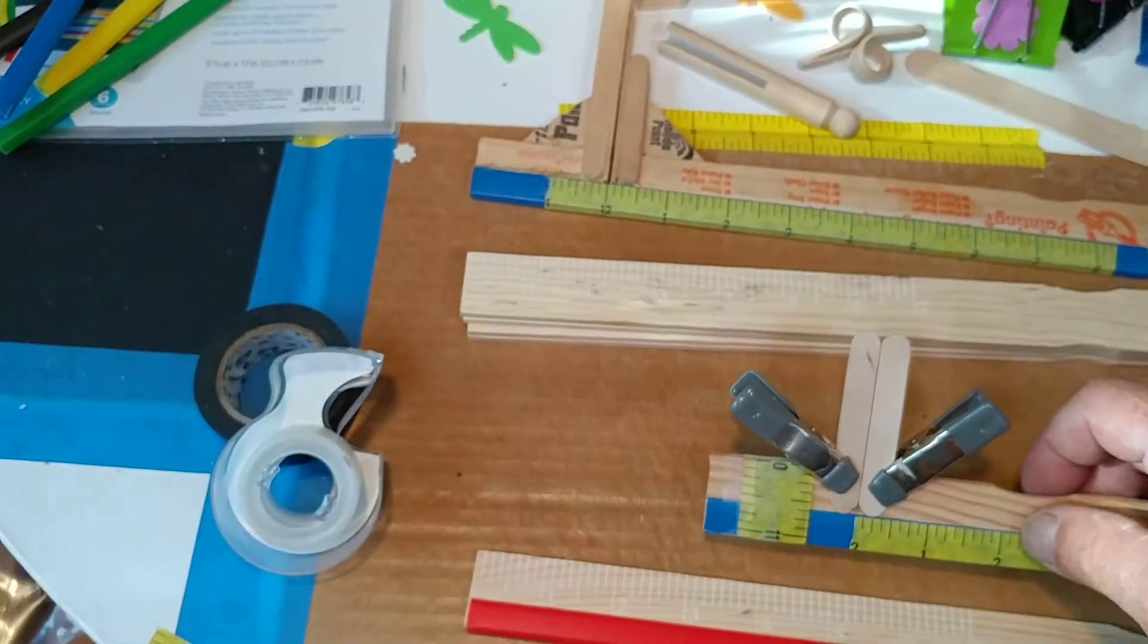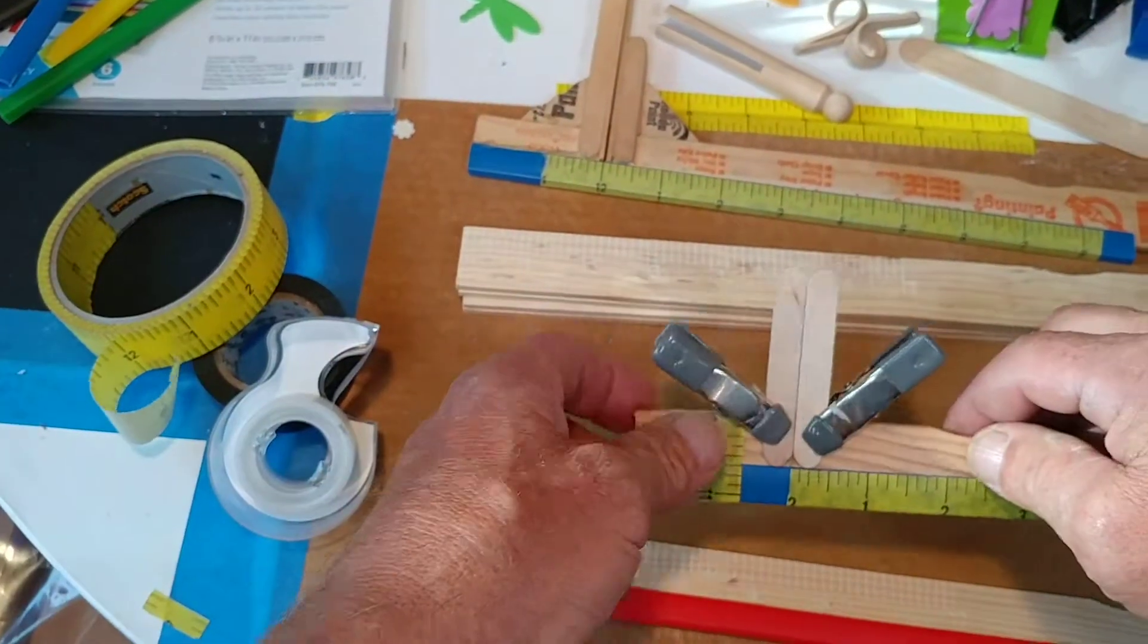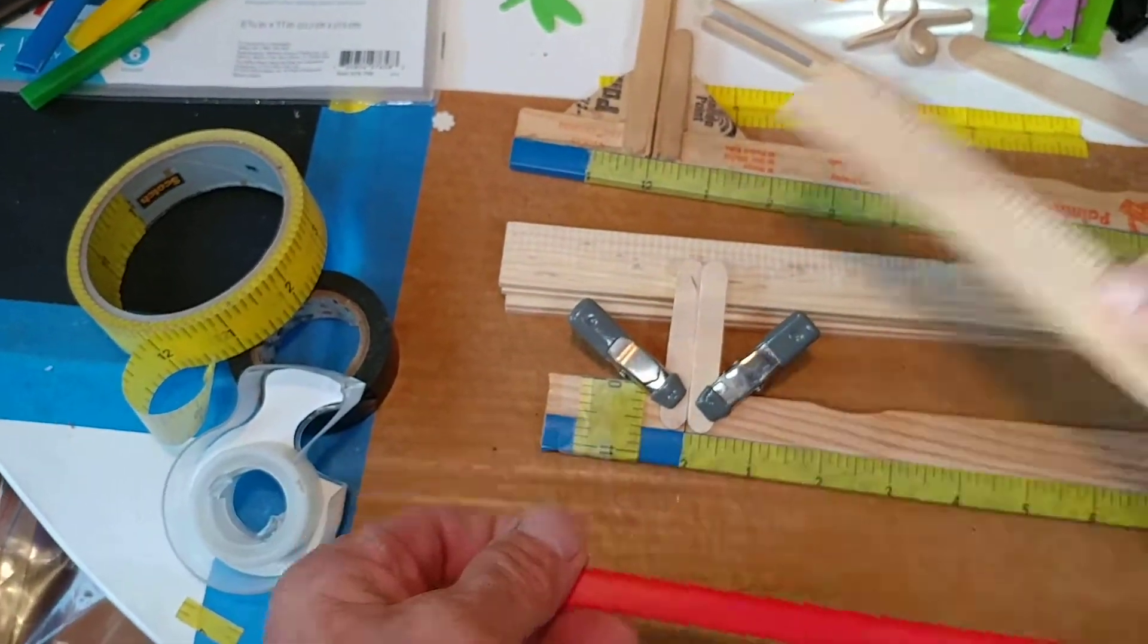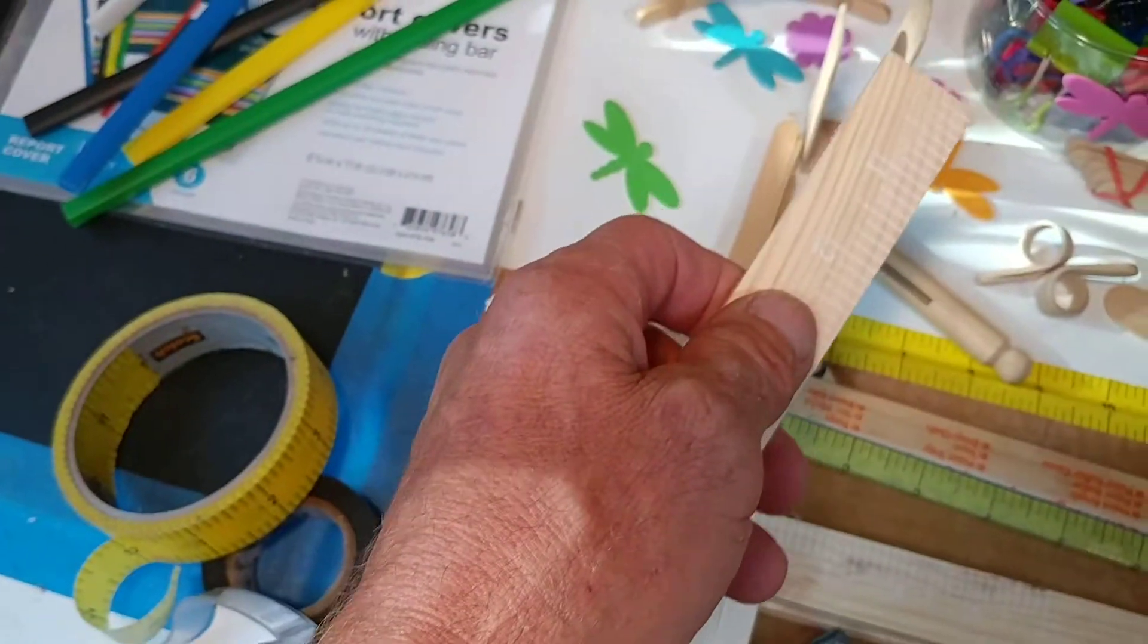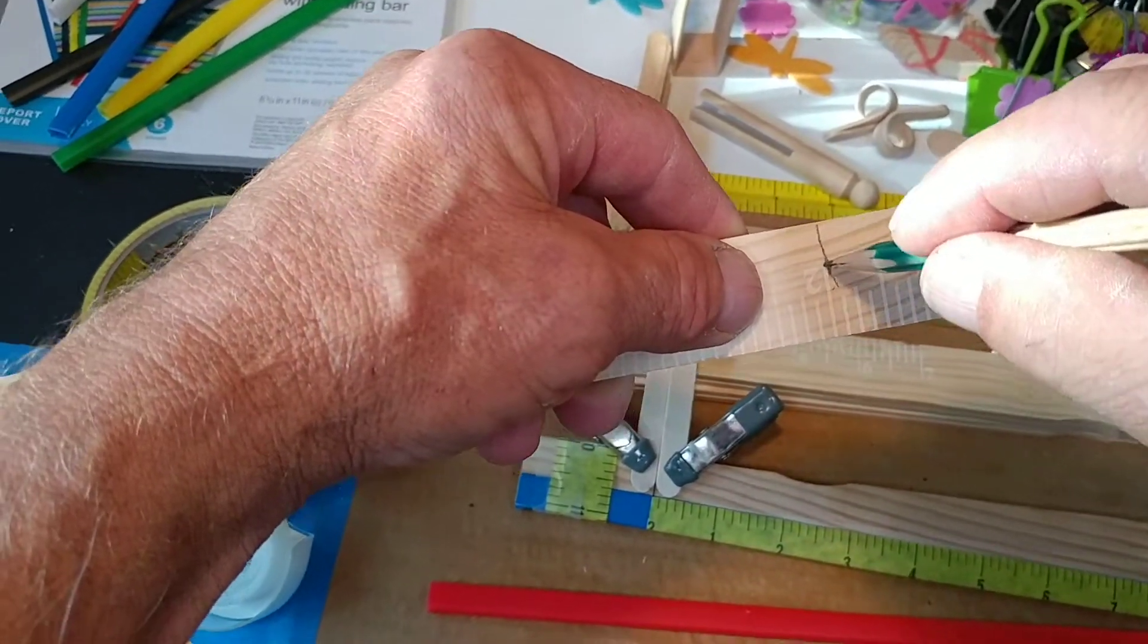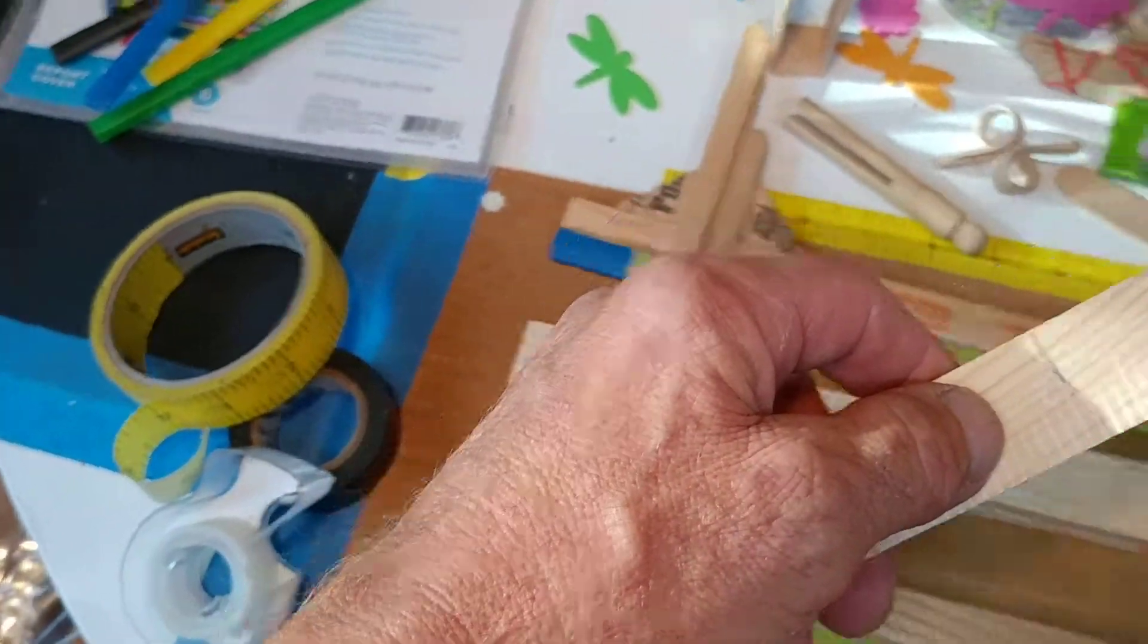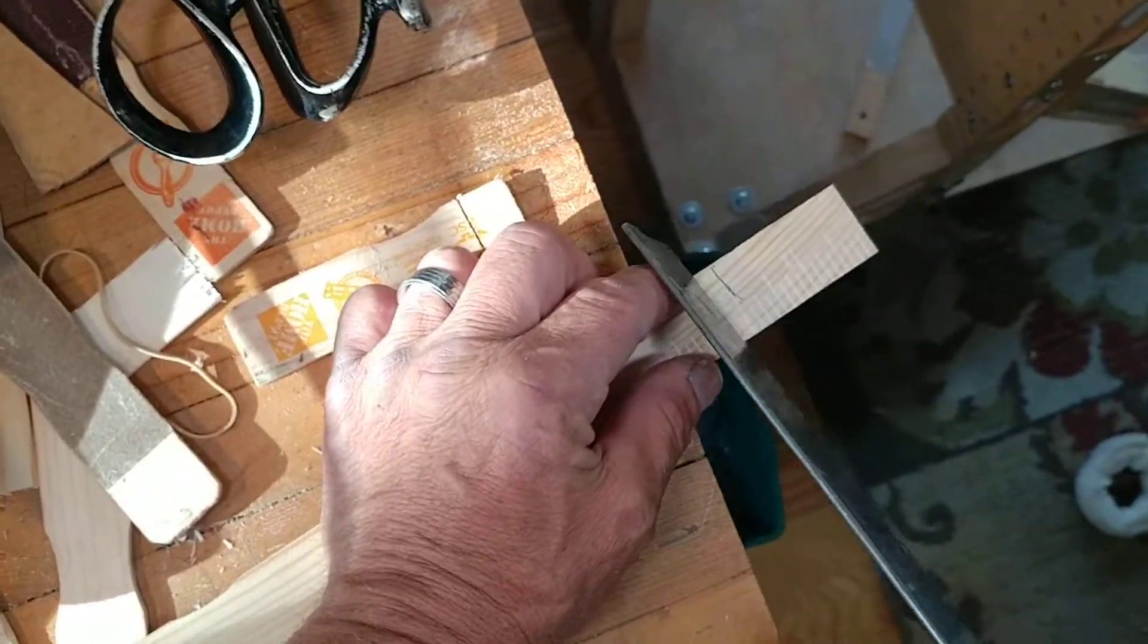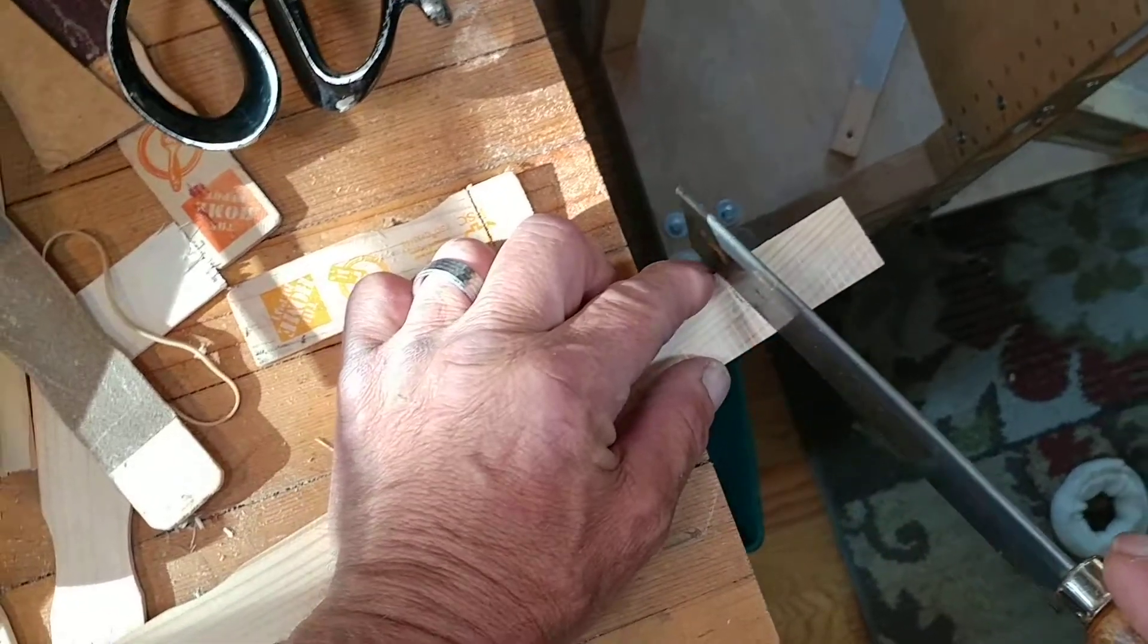Or even the ruler tape. You can mark that along the cut line if you don't have a line. Bear with me here for a sec.